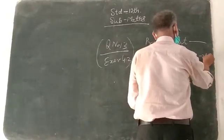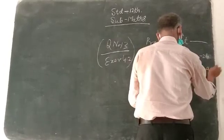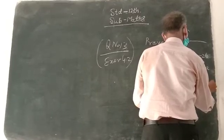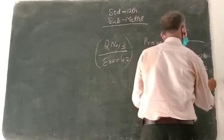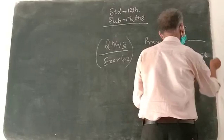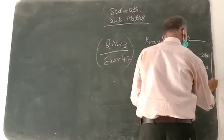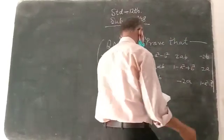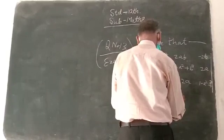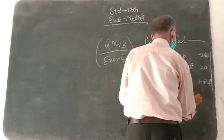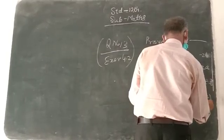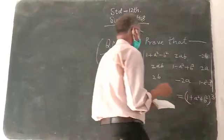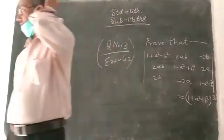2A, minus A square, minus B square, 2B. The determinant equals 1 plus A square plus B square, whole cube.